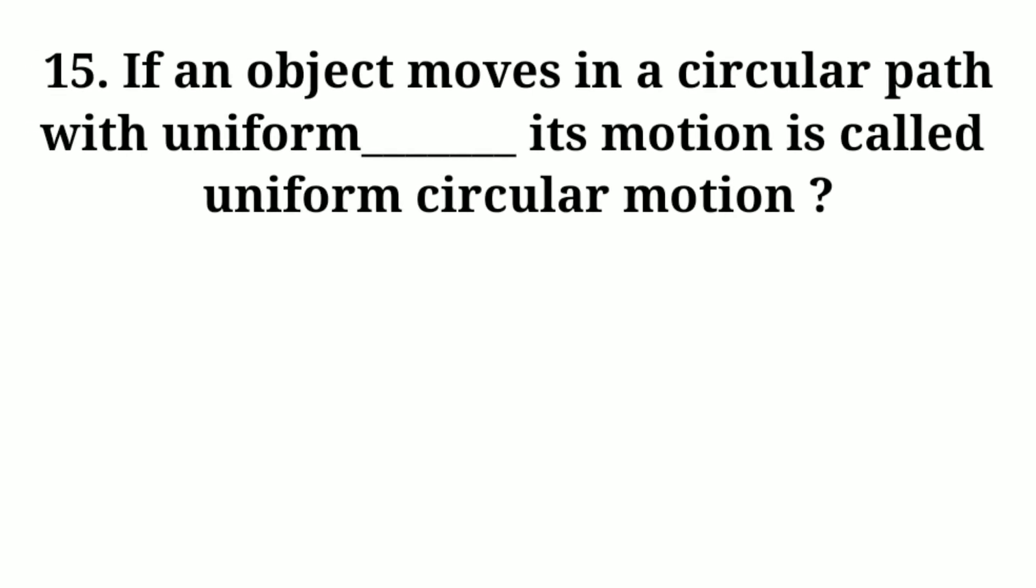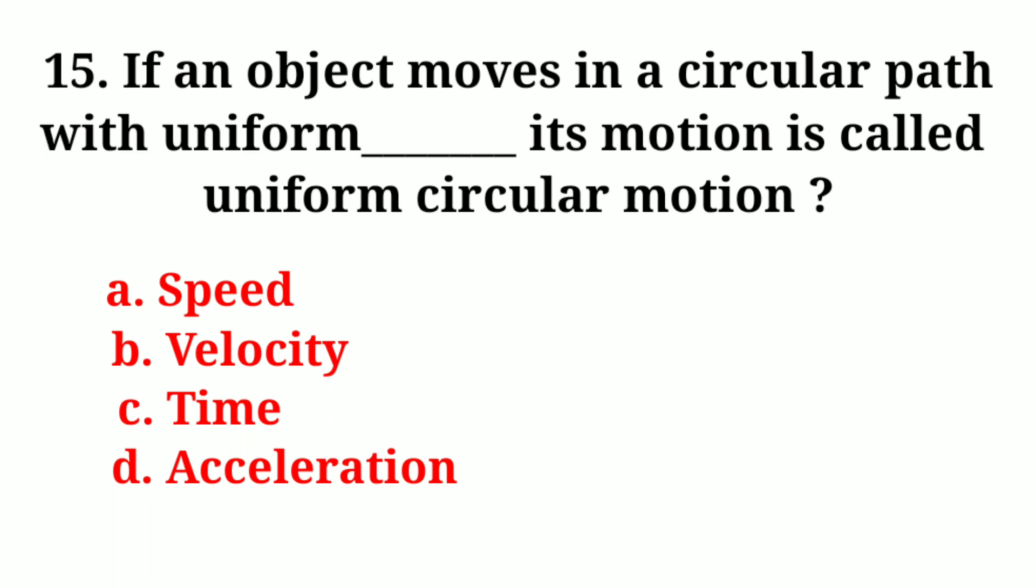If an object moves in a circular path with uniform what, its motion is called uniform circular motion? Options are speed, velocity, time, acceleration. Answer: speed.